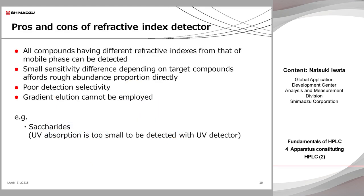In this slide, pros and cons of the RID are listed. The RID is called a universal detector, because all compounds that show a different refractive index from that of the mobile phase can be detected in principle. It is sensitive to coeluting interferences due to its non-selectivity, and also sensitive to temperature and pressure fluctuations. By contrast, the RID shows small sensitivity difference depending on the target compounds. This feature affords a rough abundance proportion of sample components directly, so the RID is commonly used in GPC analysis for calculating molecular weight distribution. Its sensitivity is generally worse compared to that of the UV detector. Gradient elution cannot be employed due to greatly changing refractive index of mobile phase. RID is commonly used for saccharides that have no UV absorption.